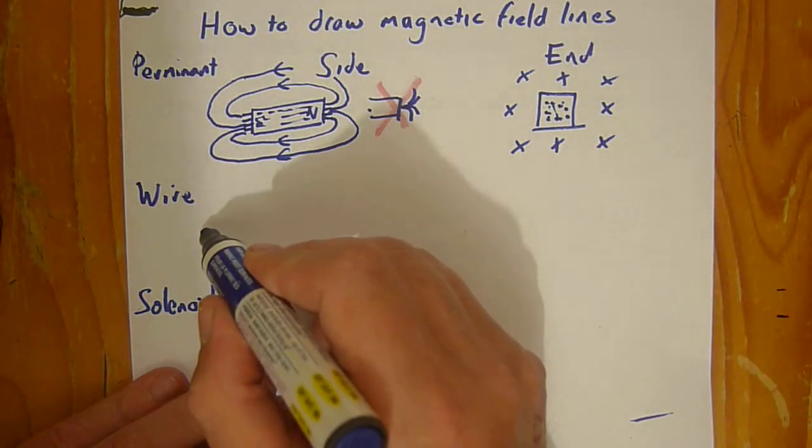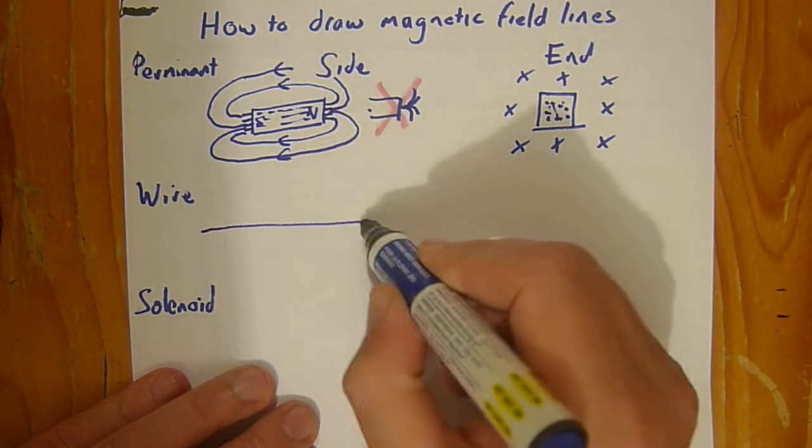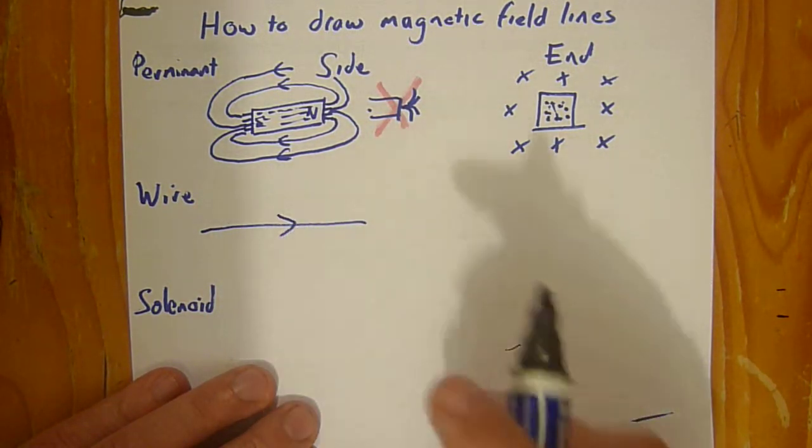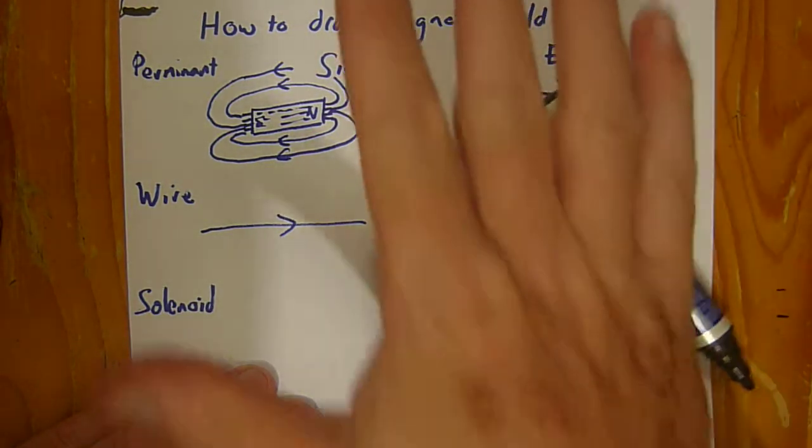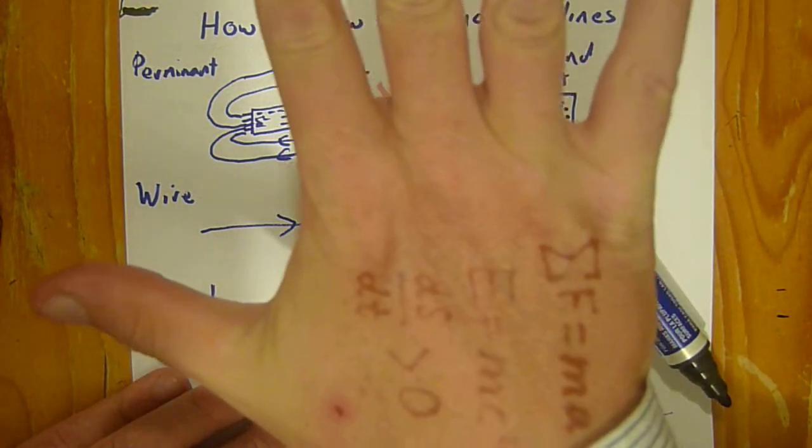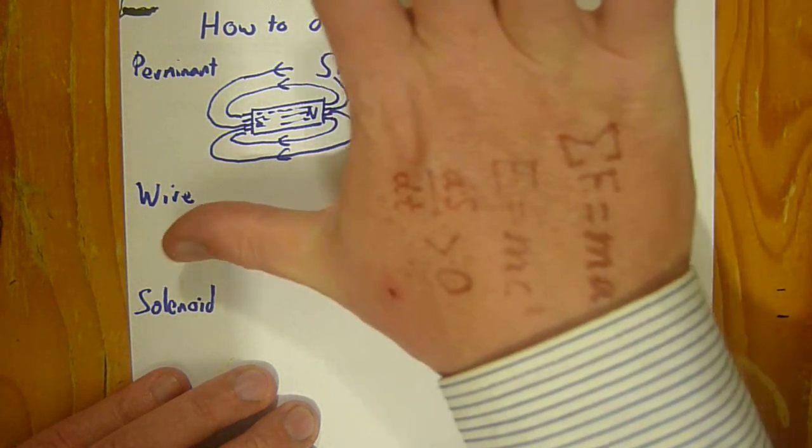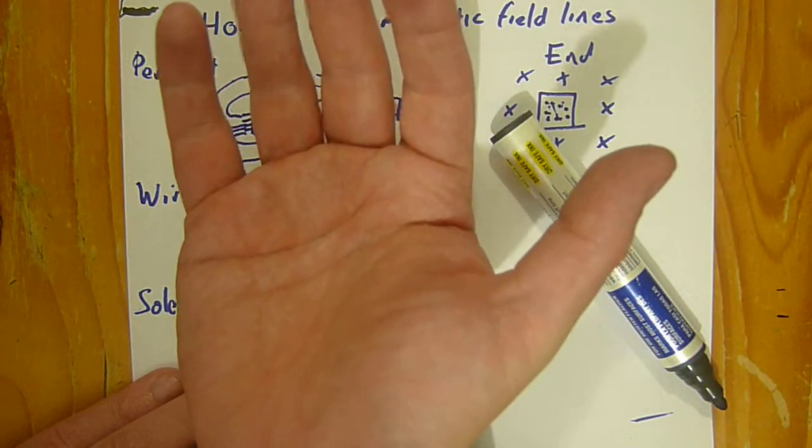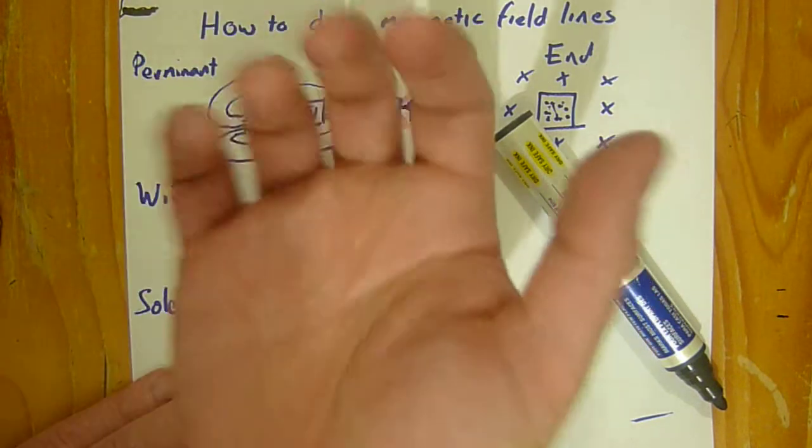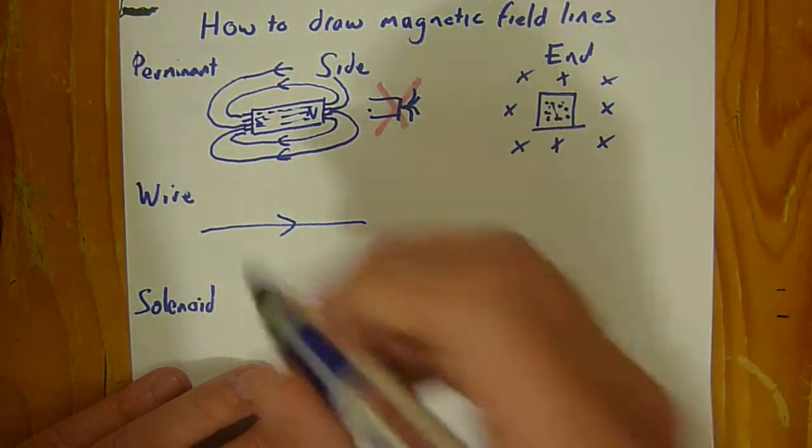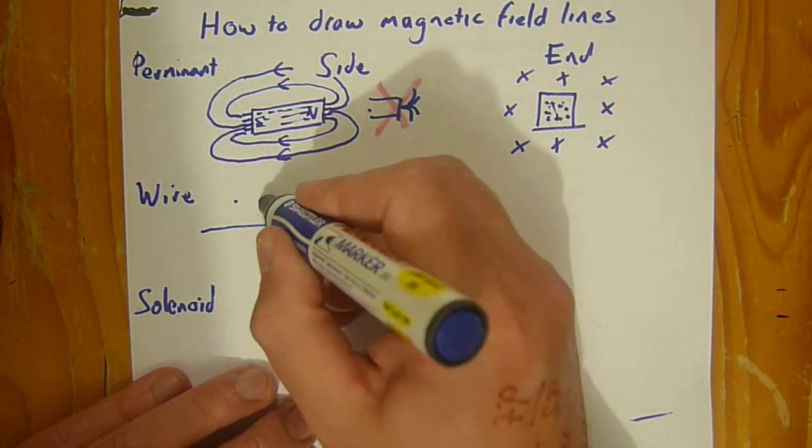Now if we have a wire, a side view of a wire like this, we use the right hand grip. This is my right hand, and the current, the conventional current, is your thumb, so it goes that way. The actual field lines are coming up out of the page, so the dots in this case will be here.